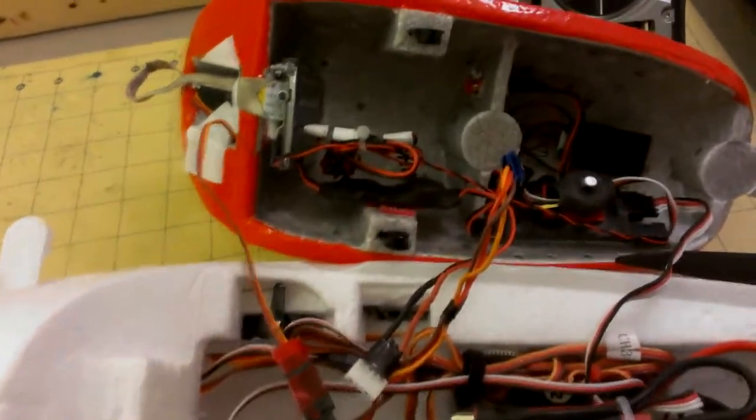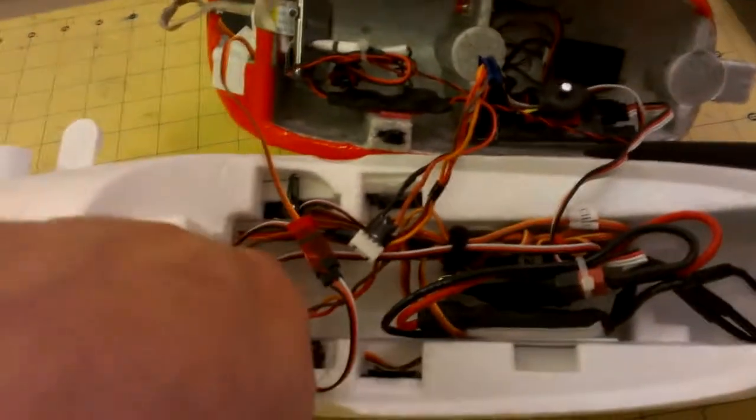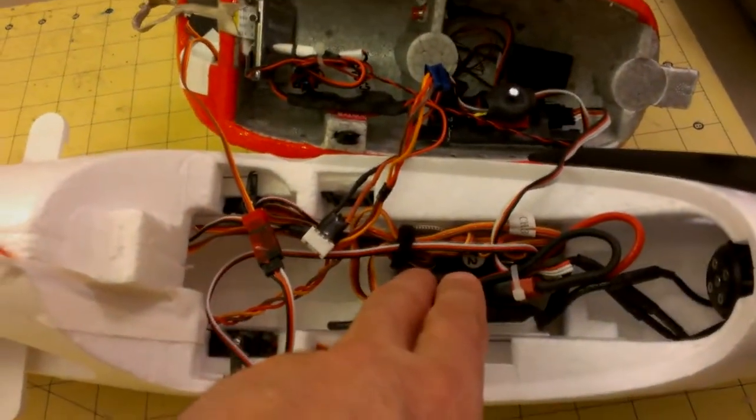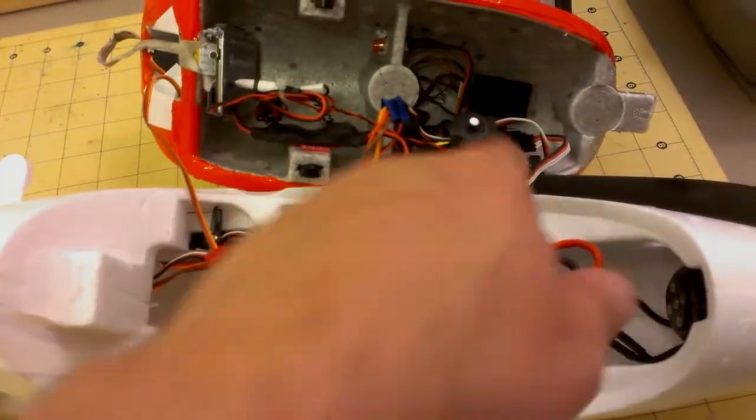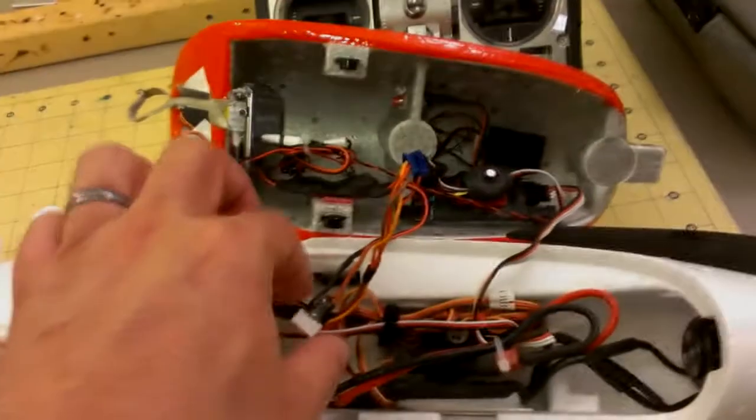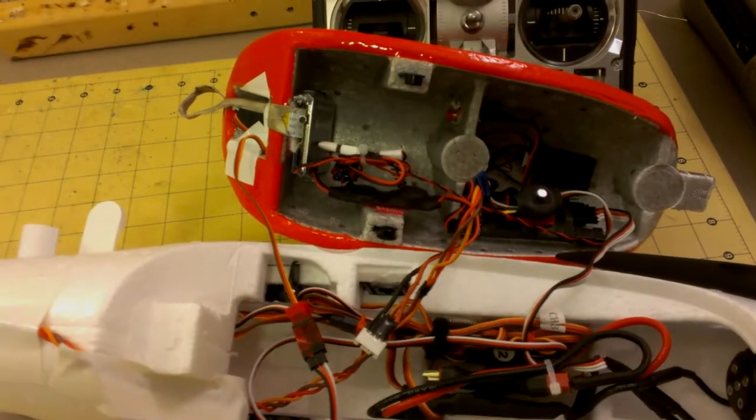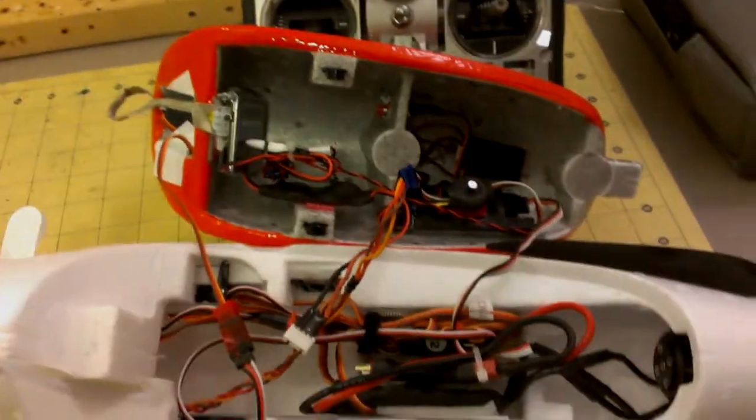So, everything is tucked in there. The wiring is a bit messy. But I get a 3,000 milliamp hour battery tucked in here to power the plane. And then, and also my OSD. And then I've got this right here that taps into a 500 milliamp battery. That powers just my camera.